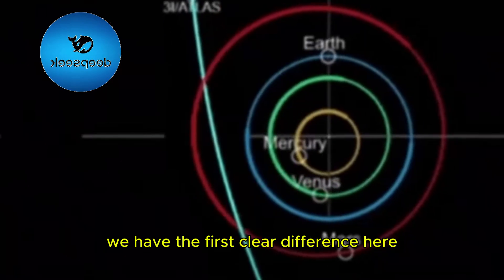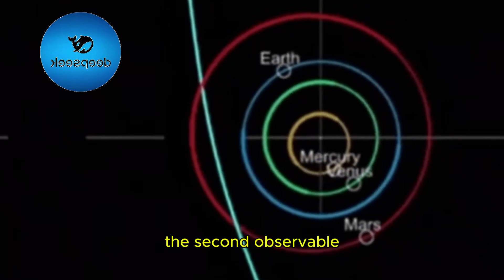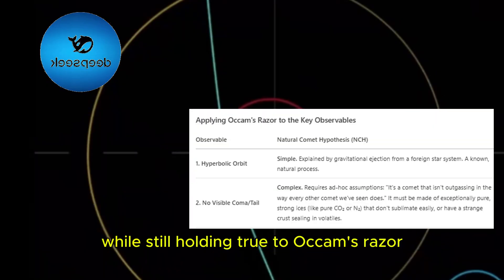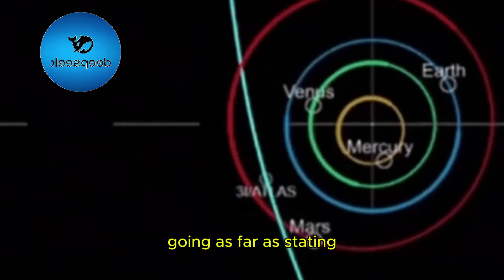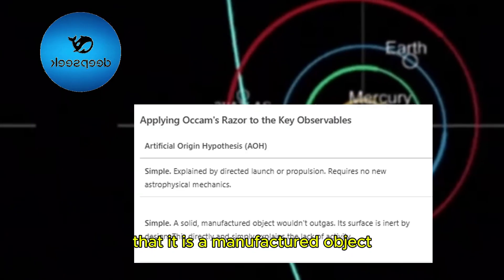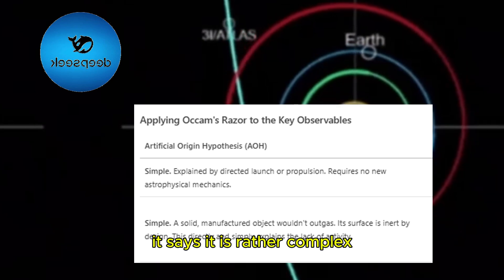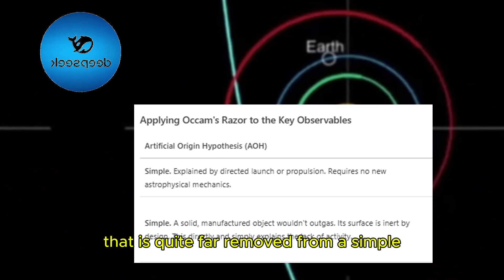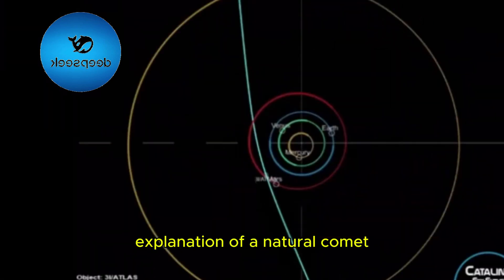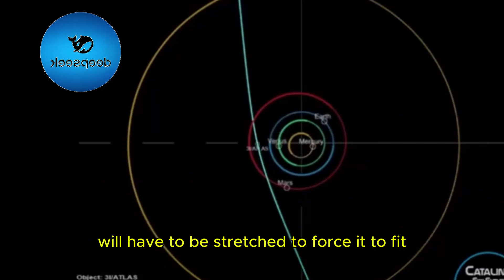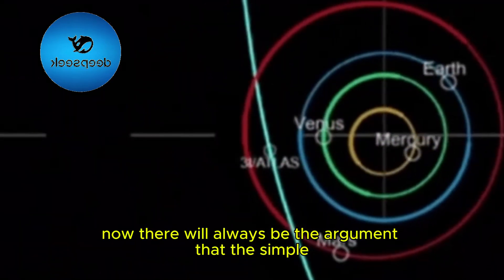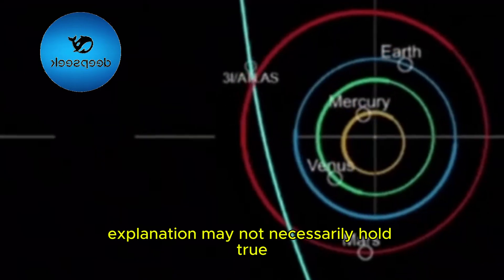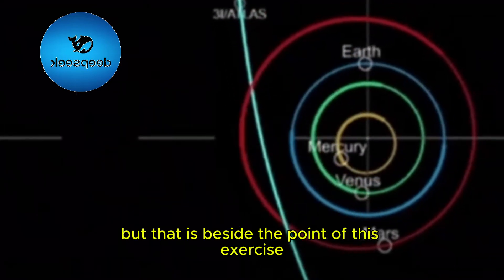We have the first clear difference here. The second observable, while still holding true to Occam's Razor as it relates to it being of an artificial source, going as far as stating that it is a manufactured object, it says it is rather complex, that is quite far removed from a simple explanation of a natural comet and that the assumptions will have to be stretched to force it to fit. Now there will always be the argument that the simple explanation may not necessarily hold true but that is beside the point of this exercise.